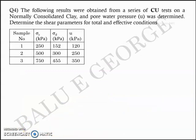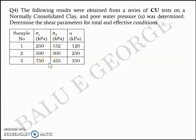Question number 4. The following results were obtained from a series of CU (consolidated undrained) tests on a normally consolidated clay, and the pore water pressure U was determined. Determine the shear parameters for total and effective conditions. Three samples are given: sigma C values are 250, 500, and 750 kilopascal; deviator stresses are 150, 300, and 455 kilopascal; and pore pressures U are 120, 250, and 350 kilopascal.